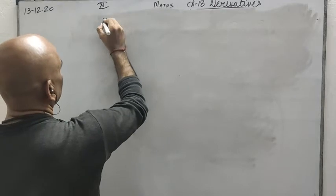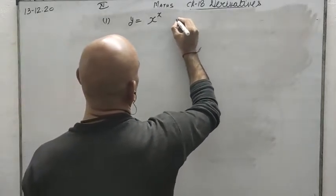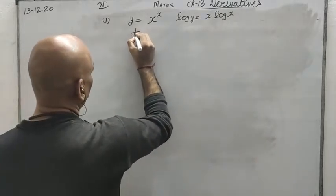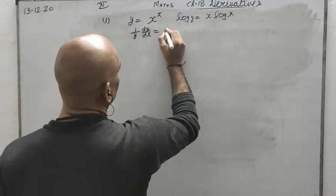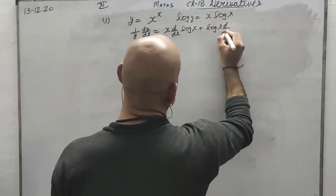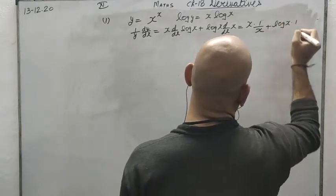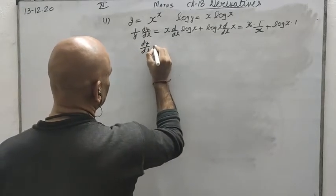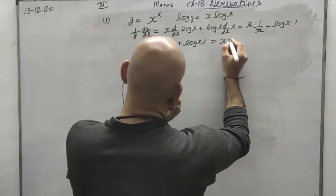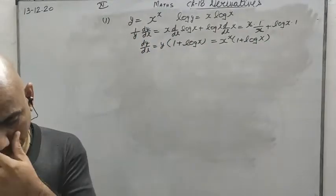First example of logarithmic differentiation: y equals x to the power x. Taking log both sides: log y equals x log x. On differentiation: 1 upon y times dy by dx equals x times d over dx of log x plus log x times d over dx of x. The differential of log x is 1 upon x, so x and x cancel. dy by dx equals y times (1 plus log x). Since y equals x to the power x, the answer is x to the power x times (1 plus log x).